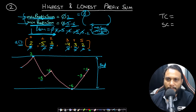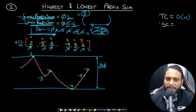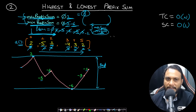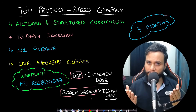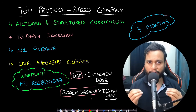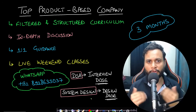The time complexity of the prefix sum approach is O(n) — we do exactly one pass — and the space complexity is O(1). Now let's look at both the codes.